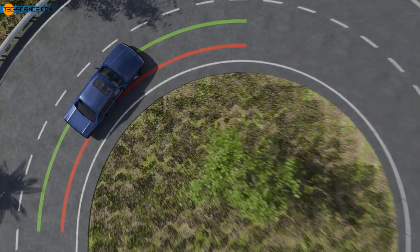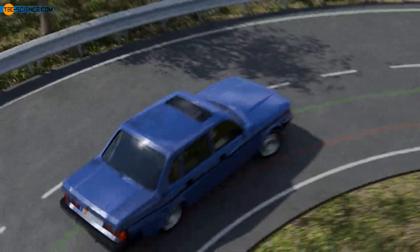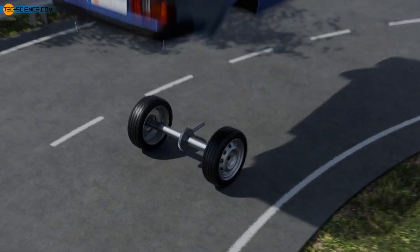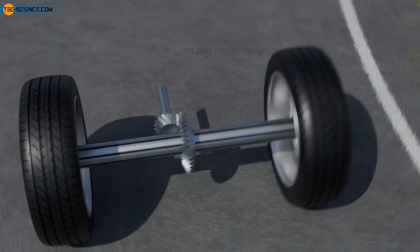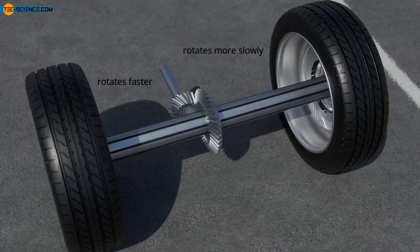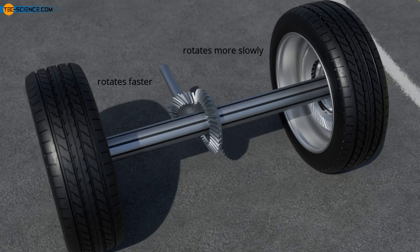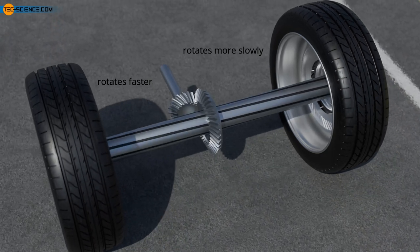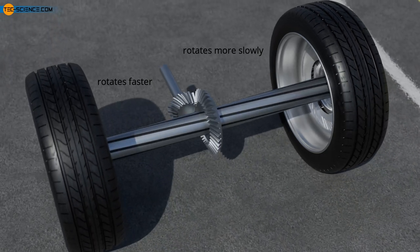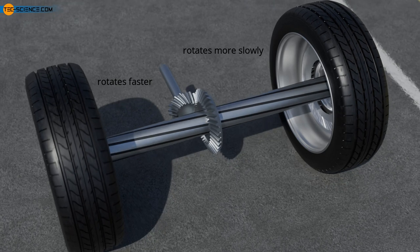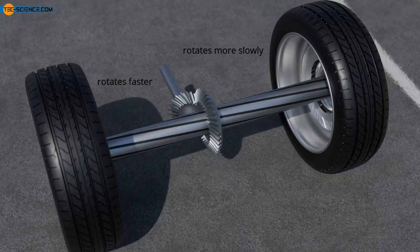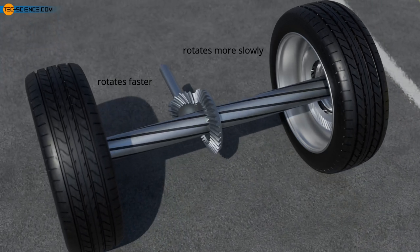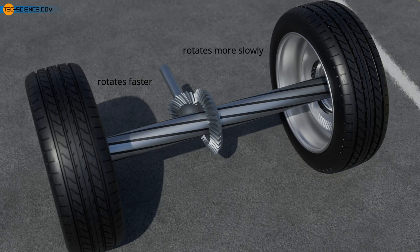If the two wheels were connected by a common shaft, the shaft would twist due to the different rotational speeds. Sooner or later, such torsion is balanced out by the wheel slipping. This slipping during cornering not only reduces driving safety, but also leads to heavy tire wear and, in the long run, to shaft damage.